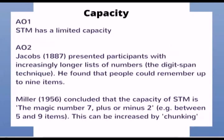Short-term memory also has a very limited capacity. In 1887, Jacobs experimented with the capacity of short-term memory by presenting participants with increasingly longer lists of numbers, called the digit span technique. He found that people could remember a maximum of 9 items. Miller later reviewed studies on the capacity of short-term memory and concluded that the capacity is the magic number 7 plus or minus 2 — between 5 and 9 items. This can be increased by chunking.